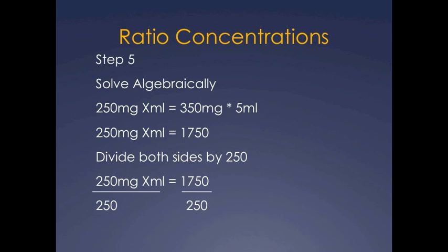Then you will divide both sides by 250 so that you can cancel out 250 from one side and you will isolate the x. So you're writing 250 milligrams times x ml divided by 250 is equal to 1750 divided by 250.